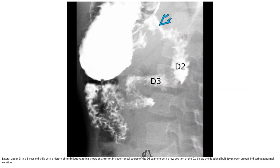Case example: upper GI in a three-year-old with a history of non-bilious vomiting shows an abnormal position of the duodenojejunal junction at the D3 segment, with a low position of the DJJ below the duodenal bulb, indicating abnormal rotation.